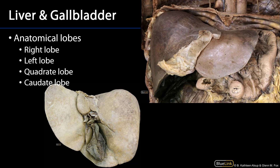Turning our attention to the liver in particular, this is another anterior view. Here we can see the right lobe of the liver, which is the most dominant, and there's the left lobe of the liver. Along here, this is the round ligament of the liver — ligamentum teres hepatis. And in association with the round ligament, we have the falciform ligament. The falciform ligament and the round ligament are very closely allied with one another.